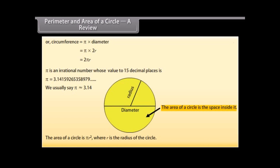The area of a circle is found to be πR², where R is the radius of the circle.